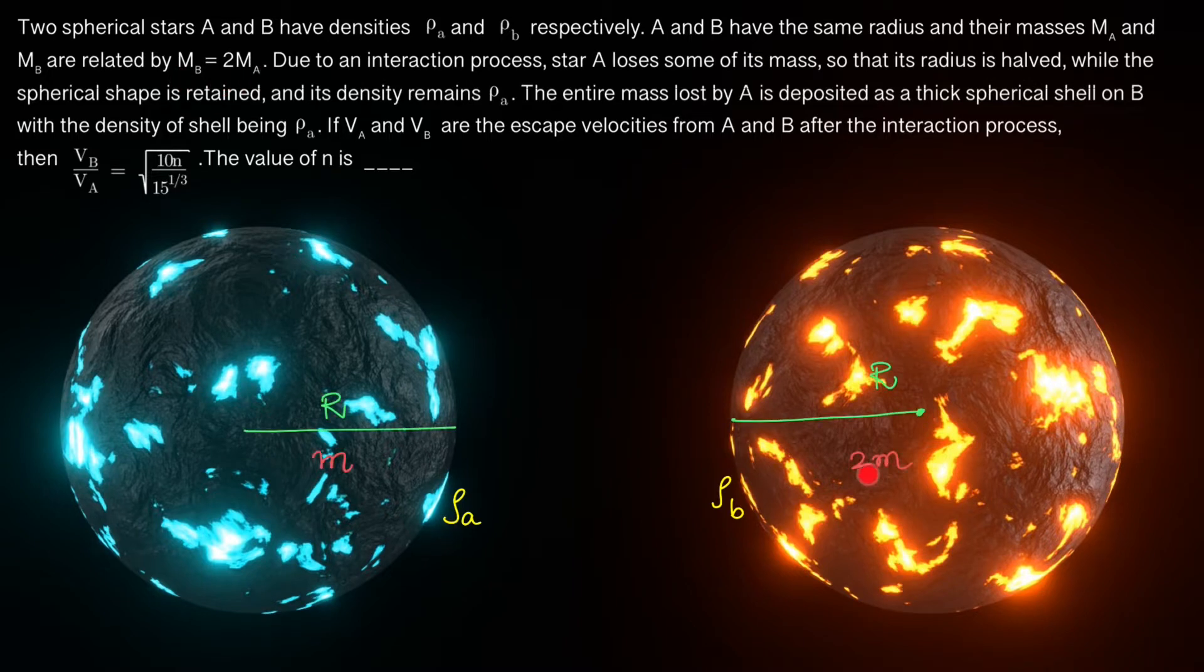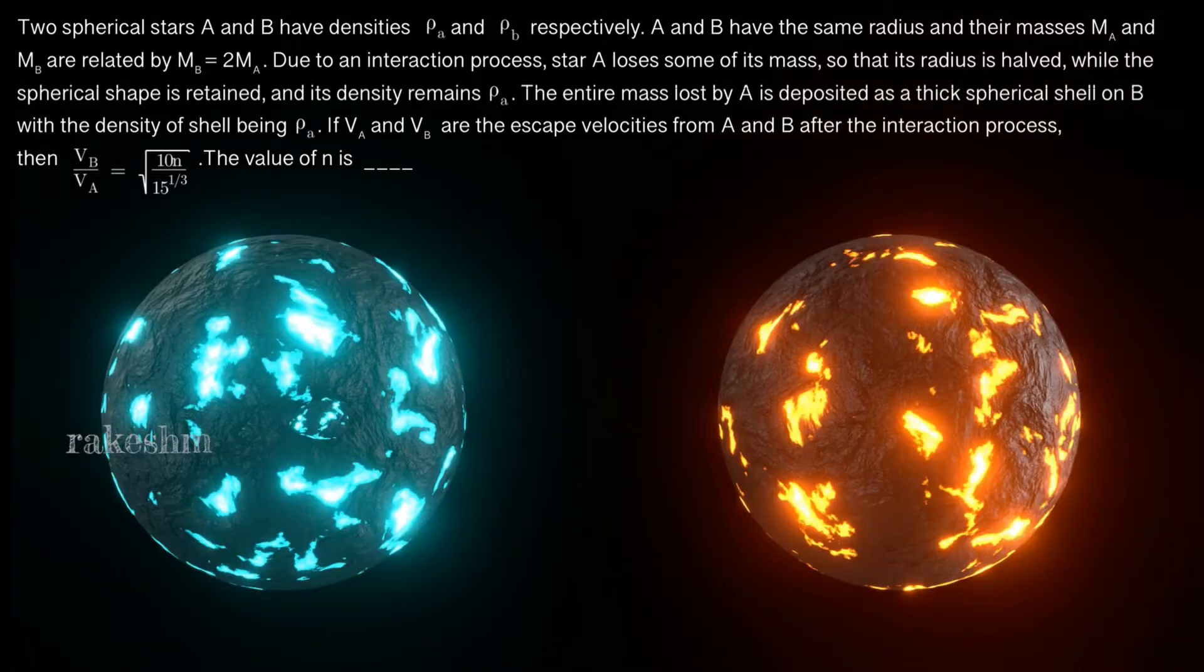Due to an interaction process, star A loses some of its mass so that its radius is halved while the spherical shape is retained and density remains ρ_A.